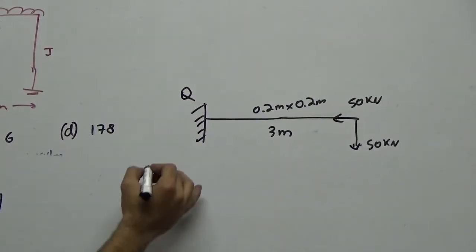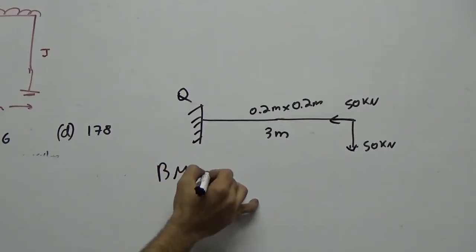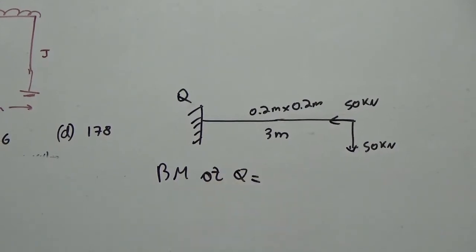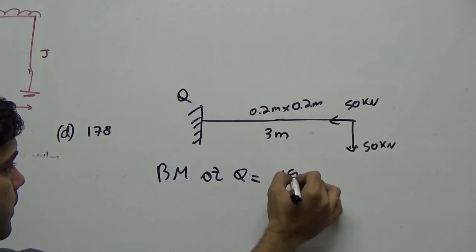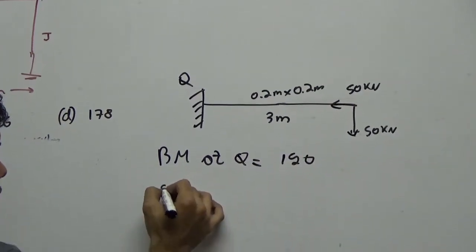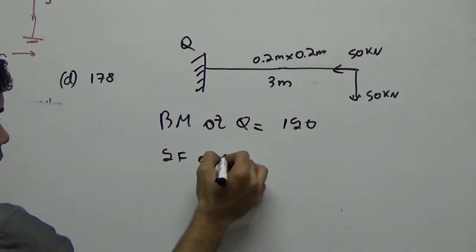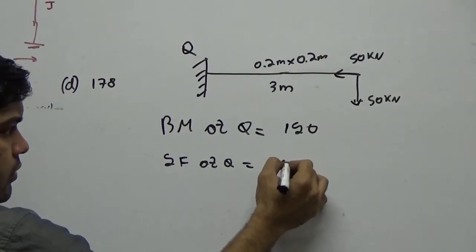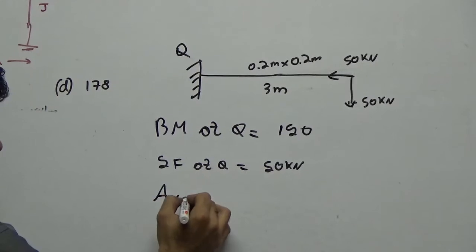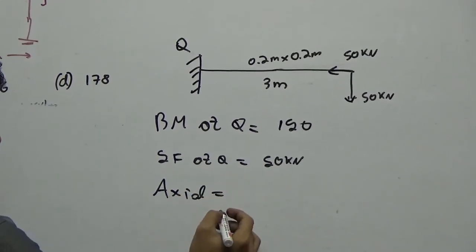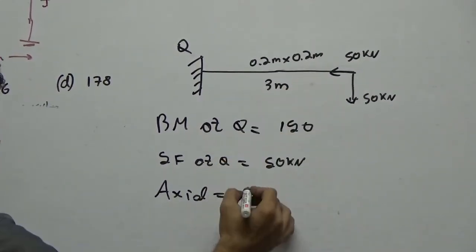What is the moment at Q? What is the bending moment at Q? Obviously, 50 into 3, so you have 150. What is the shear force at Q? 50 kN. What is the axial force at Q? Axial force will be 50 is your axial load. So 50.